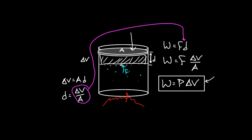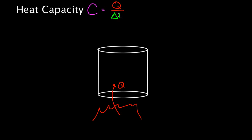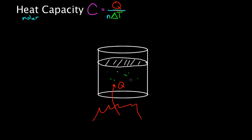Now we're finally ready to talk about heat capacity. Heat capacity is defined as: imagine you add a certain amount of heat to your gas — how much does the temperature increase? That's what heat capacity C tells you. It's defined as the amount of heat added divided by the change in temperature. The molar heat capacity is Q divided by n (number of moles) times delta T. There are different heat capacities depending on whether we allow the piston to move: heat capacity at constant volume, and heat capacity at constant pressure.